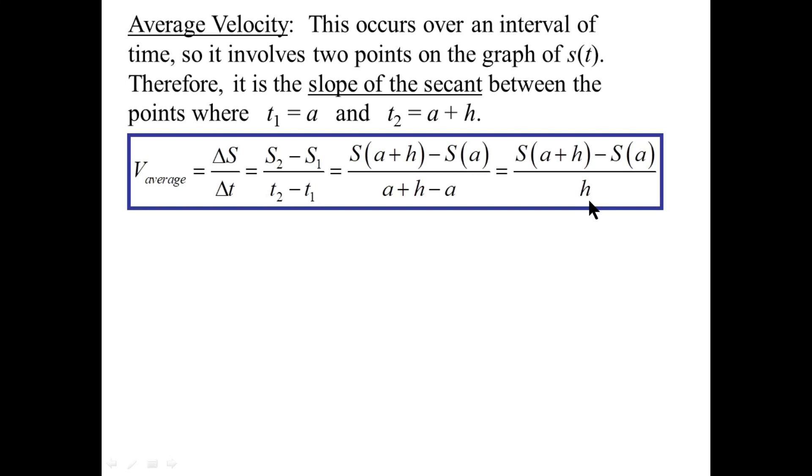Average velocity occurs between two points. Notice, it's the slope of a secant where h is fixed, so we won't take the limit as h approaches zero. h is the length of time in question.